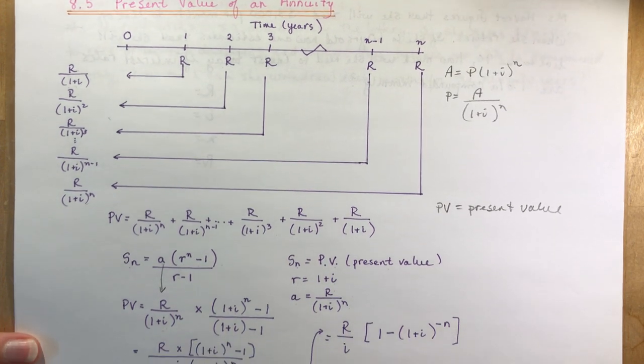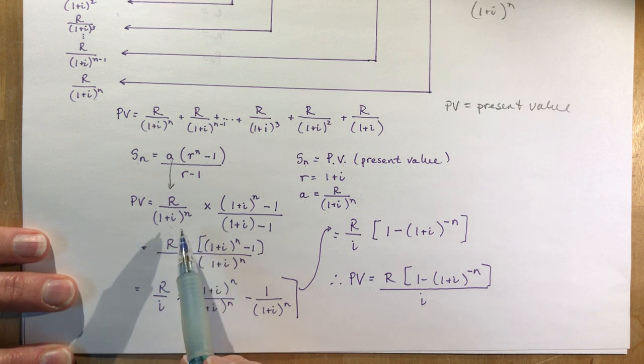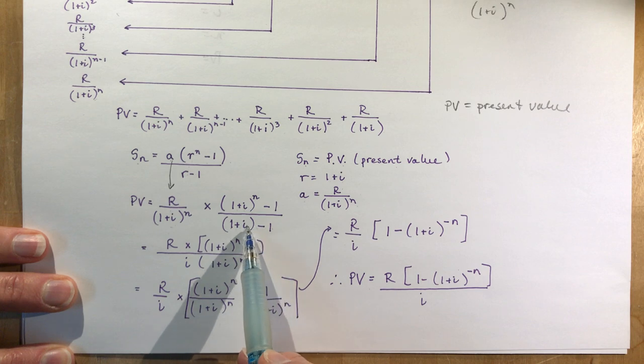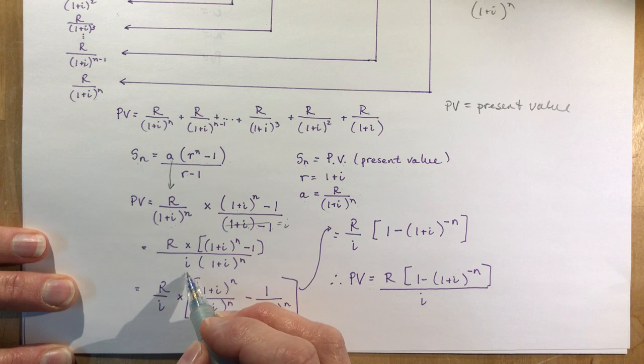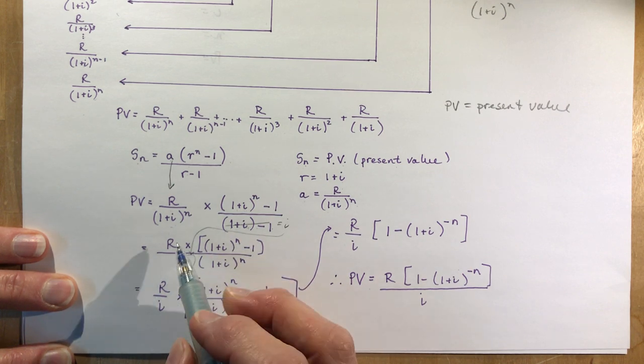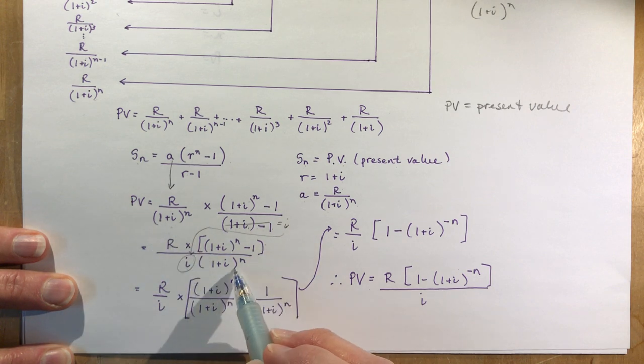In the next line what we have is the regular payment times now 1 plus i minus 1 is just i. So this just becomes i and I put it here. And I have (1+i)^n - 1 over (1+i)^n.